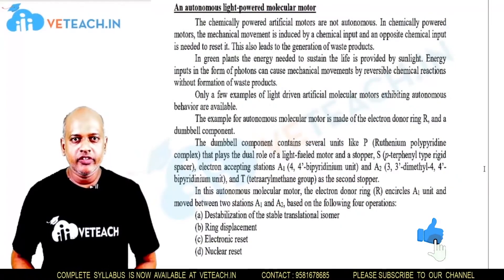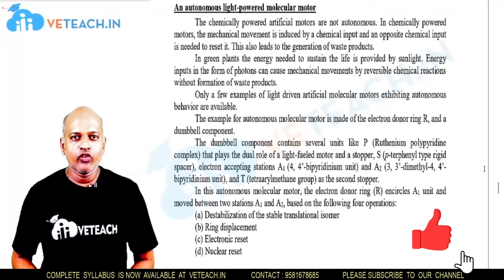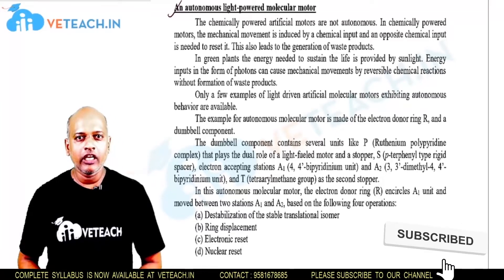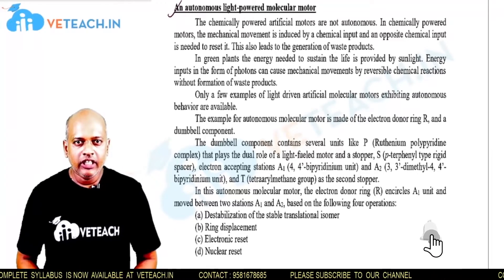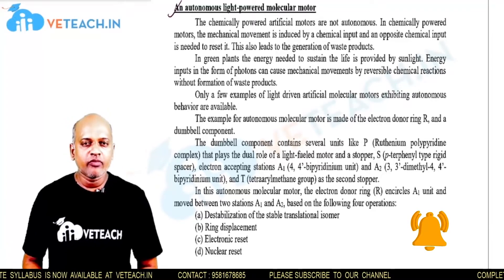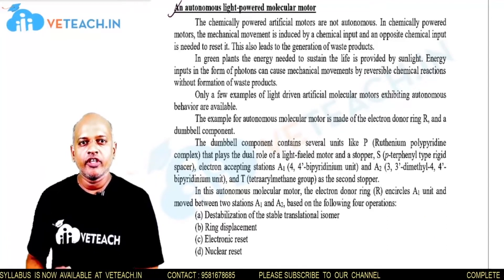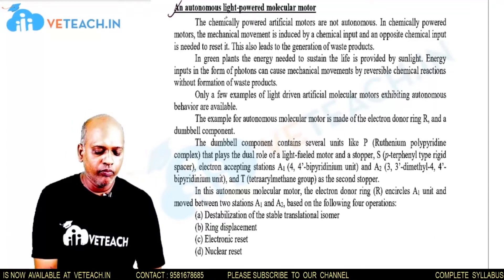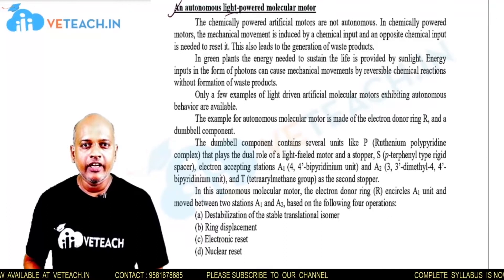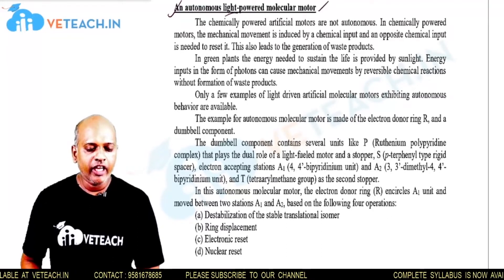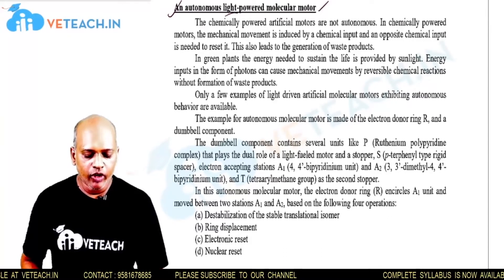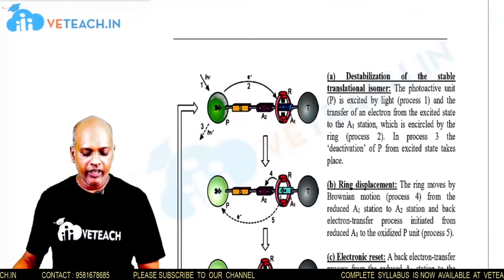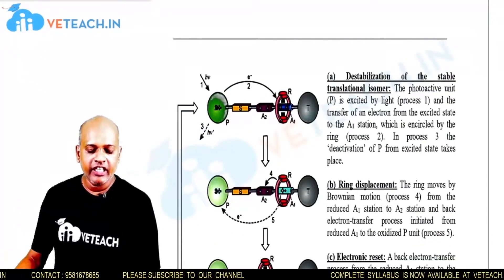Welcome to We Teach. In this session, we are going to discuss an autonomous light-powered molecular motor. Autonomous means it goes on its own energy, and by applying light energy it is called an autonomous light-powered molecular motor. This can be explained by taking rhodoxane as an example.